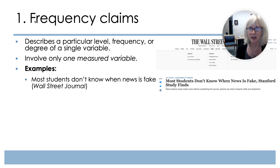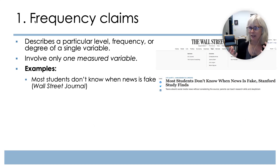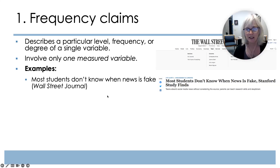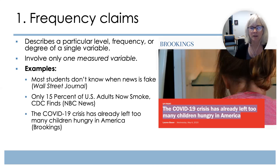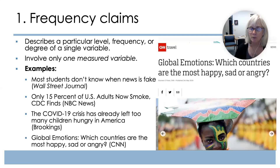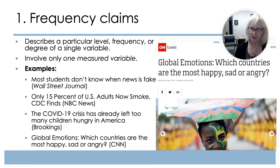With frequency claims, we're looking at how often or how significant a particular variable is. For example: most students don't know when news is fake; only 15% of US adults now smoke; the COVID-19 crisis has already left too many children hungry in America; global emotions — which countries are the most happy, sad, or angry. Each of these articles is making claims about a particular frequency of events.